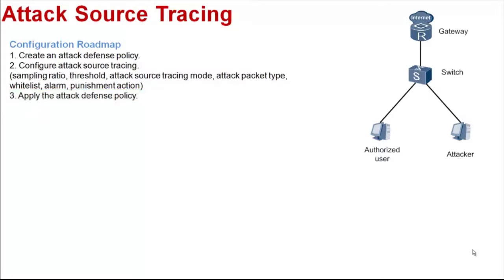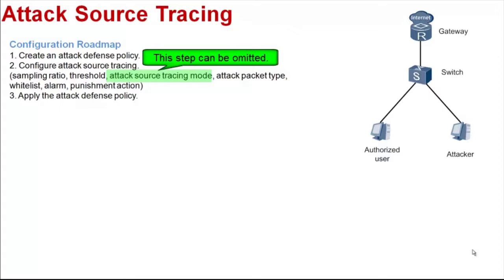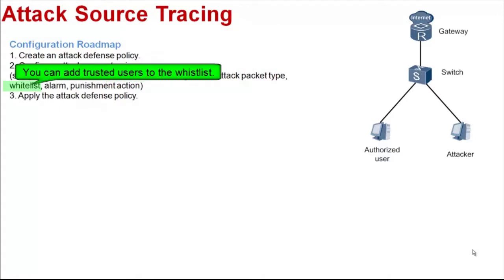When configuring attack source tracing, pay attention to the following points. By default, three attack source tracing modes are enabled after you enable the attack source tracing function, so you do not need to specify a mode. The whitelist can be configured according to your needs — you can add trusted users to the whitelist.